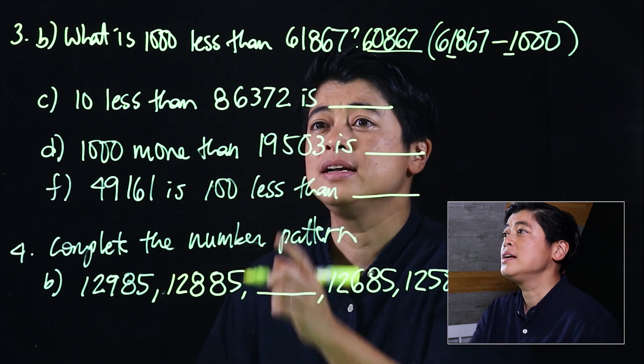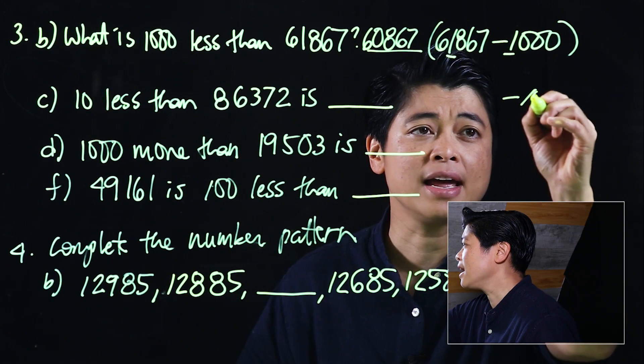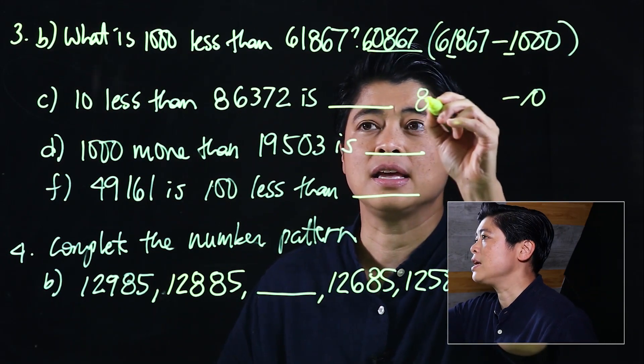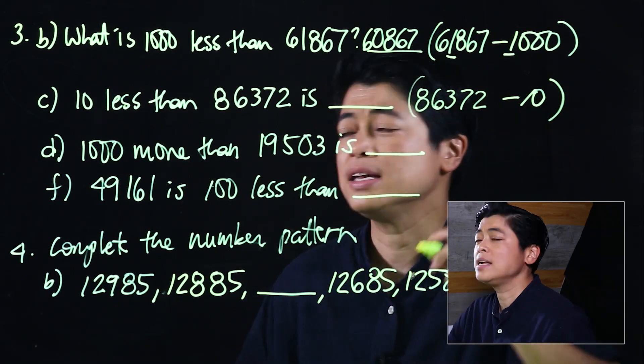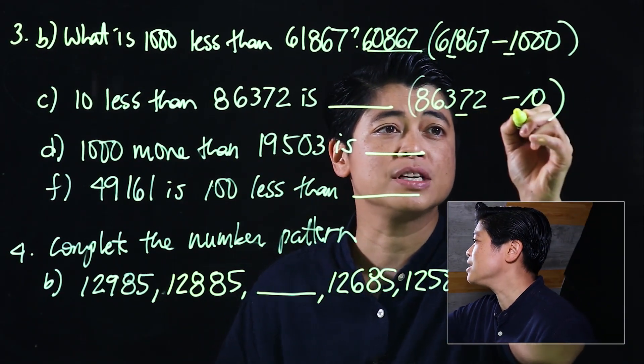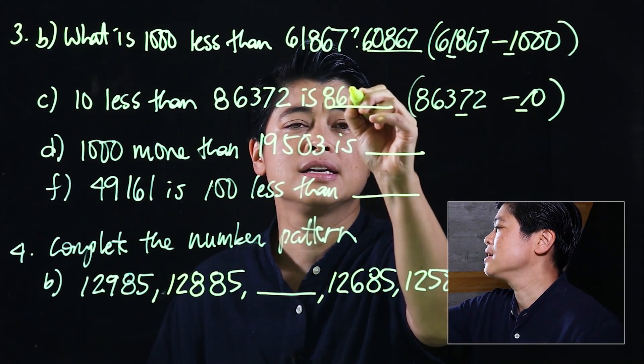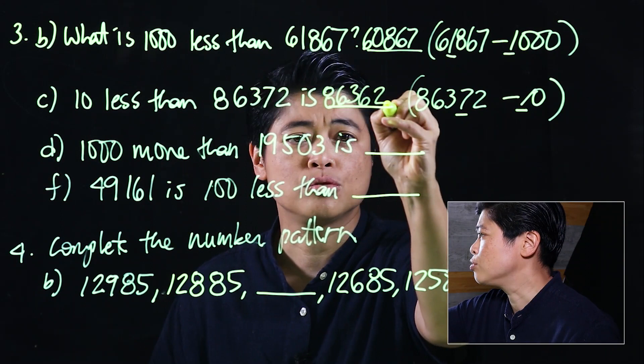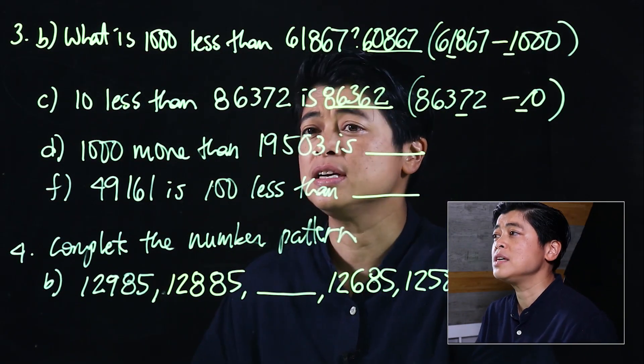So we subtract 10 from 86,372. Since this is mental math, we look at the tens place and subtract, which gives us 86,362. Then it says in letter d, 1,000 more than 19,503.